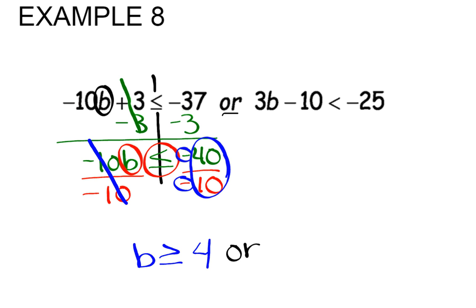That's my first part of my answer. On the second inequality, we're going to be solving for the variable B. We need to add the constant 10 to both sides of the inequality. That's going to give us 3B is less than negative 15.